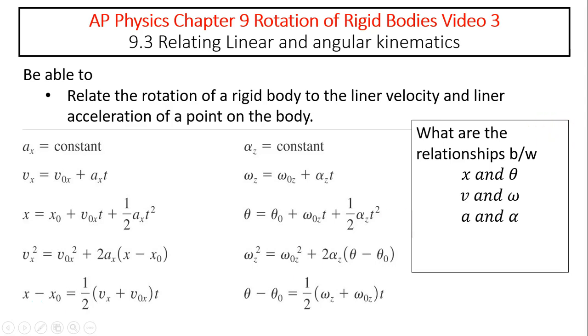We have learned before these are the set of equations for linear motion. This is the set of equations for rotational motion. We know alpha corresponds to a, omega corresponds to v, and theta corresponds to x. Today we're going to learn how they are related. How is theta related to x? How is omega related to v? And how is alpha related to a?